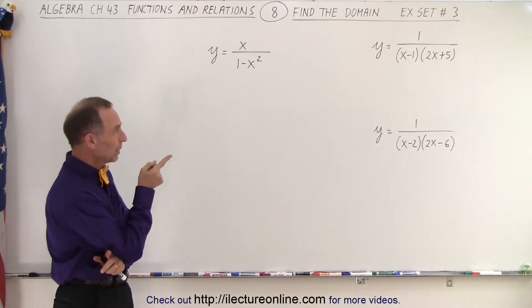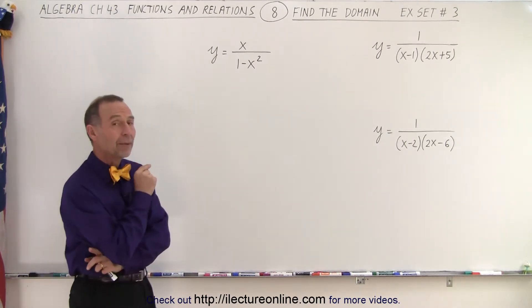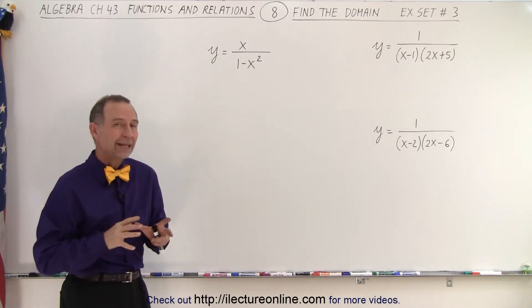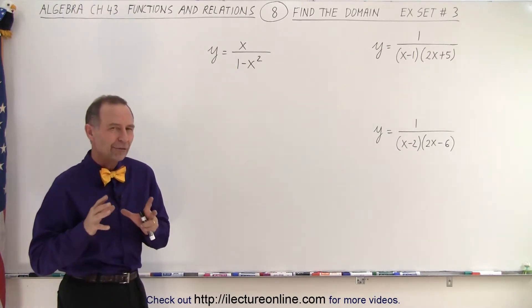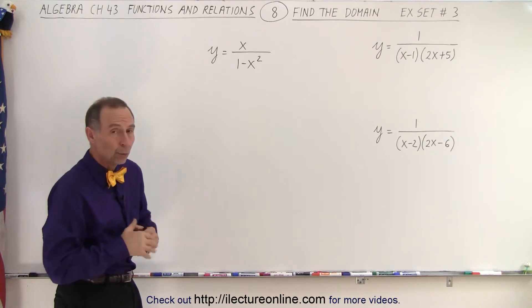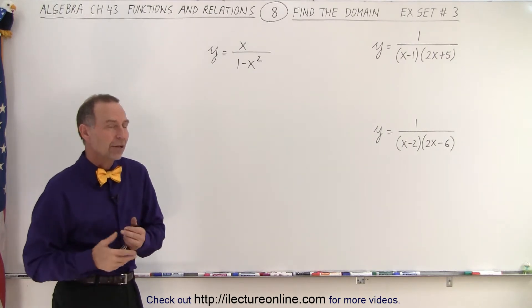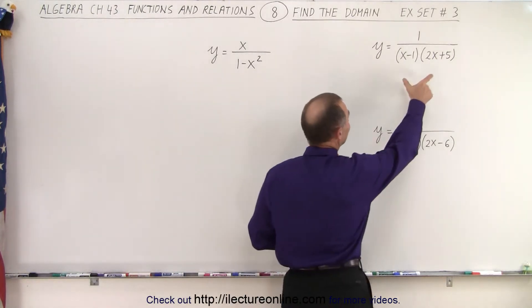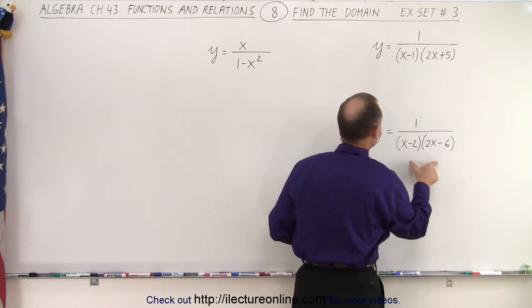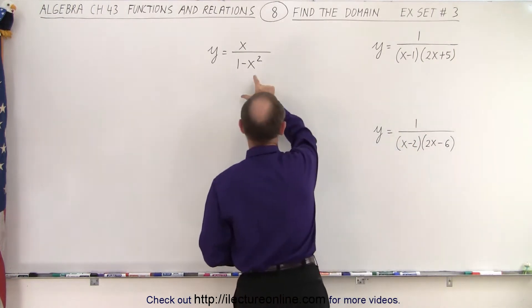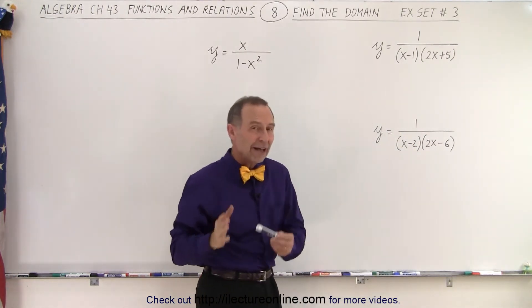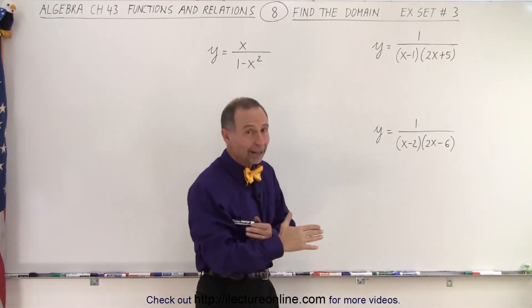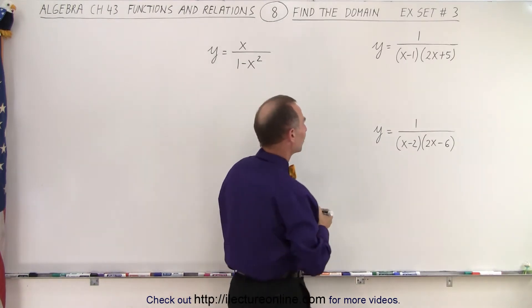What do we do? Well, they all have denominators, so definitely we want to look at each denominator and find the values that x cannot be, which would make the denominator 0. So what we're going to do is take each denominator and set it equal to 0, and find the values of x that make it equal to 0 — those become the prohibited values.